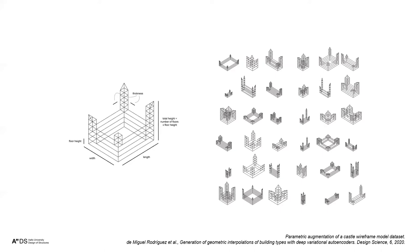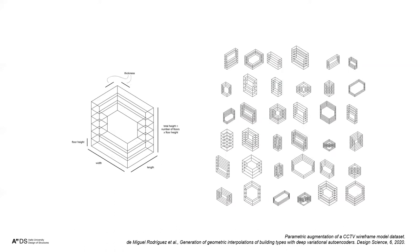Basically we write an algorithm that draws the same lattice over and over but changing different parameters — things like size, thickness, floor height, width, length, and total number of floors. This was done in Python. This enables creating many versions of the same model — what we call parametric augmentation. In machine learning there is a technique called data augmentation, and here we applied it to 3D lattices.